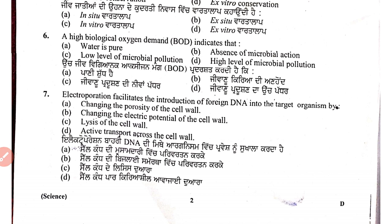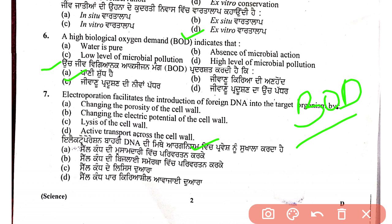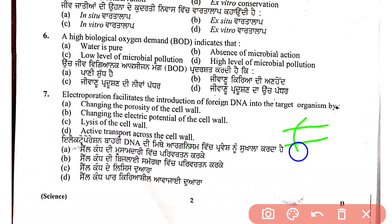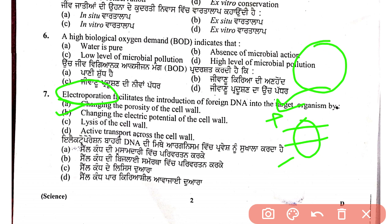Seventh question: the introduction of foreign DNA into a target organism by electroporation. Electroporation is the method of inserting a gene inside a living organism by using electricity. An electric potential is applied, which changes the cell wall's polarity, allowing the foreign particle to be inserted into the cell.